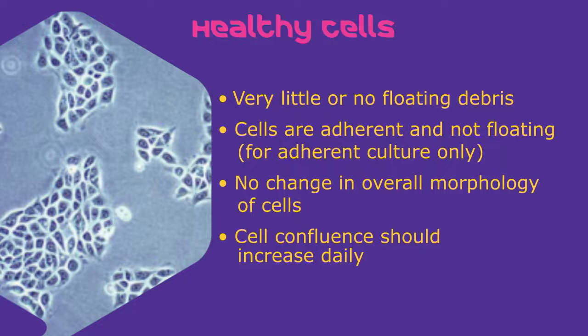For adherent cells, you should not see noticeable detachment or floating cells. While adherent cells can be examined directly after being placed on the microscope, suspension cells will require a couple minutes to settle down to the bottom of the flask before viewing. Overall, the morphology of the cell should resemble what is indicative of the expected cell line. This information can often be found from the vendor website, published papers, or web-based searches.